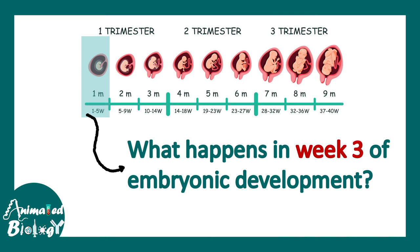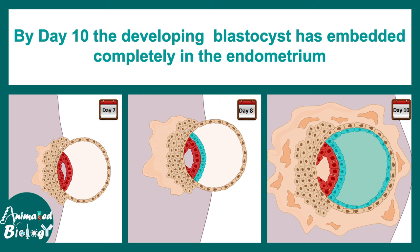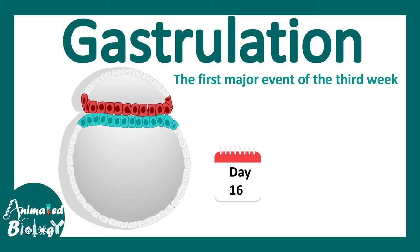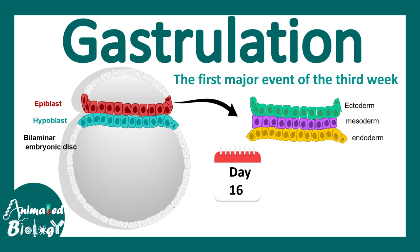At the end of week 2, the blastocyst had embedded into the endometrium completely. At around day 14 to 15, the chorionic cavity has formed and the bilaminar embryonic disc is hanging in the chorionic cavity with the help of the primitive stalk, which would be the future umbilical cord. The major event during day 16, or the third week, is gastrulation — a process that helps the embryo form multiple germ layers: namely the ectoderm, mesoderm, and endoderm from the epiblast layer.